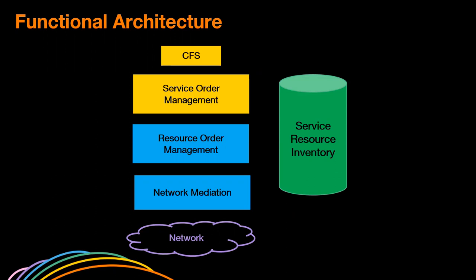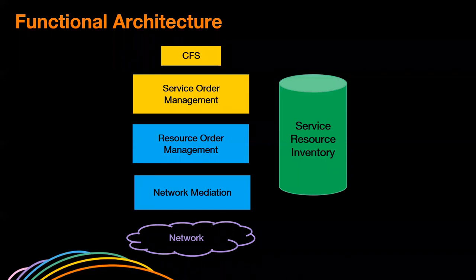Then we have a Resource Order Management function — the ROM function — focused on technical orchestration. Then a network mediation layer, whose target is to abstract network and vendor specificities from the ROM. We have a single source of truth — very important for the automation journey. The network is no longer the source of truth; the service and resource inventory is now the source of trust. Here we model all the intents we want to deploy in the network and link service resources with network resources at several levels.